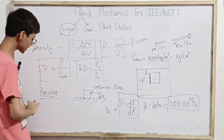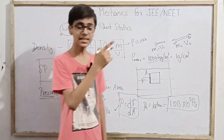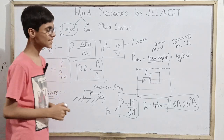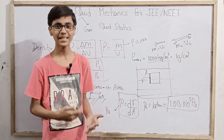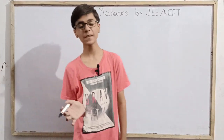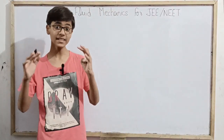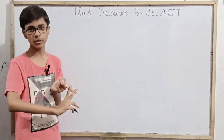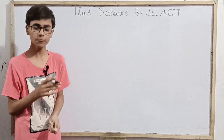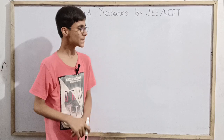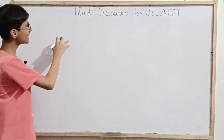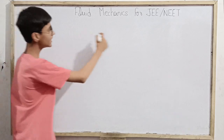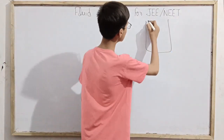So that covers density and pressure. Now let's see how pressure varies with height in a fluid. Density and pressure are not just for fluids, but pressure is mostly used for fluids. Let's take an example with a container filled with liquid.